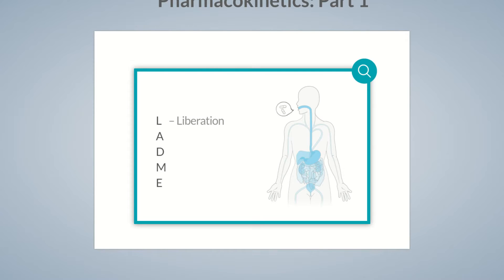L stands for liberation, the process by which a drug is released from its dosage form. A represents the absorption of a drug into the body. D indicates the distribution of a drug through the bloodstream or the lymph system in various tissues. M stands for metabolism or biotransformation of the drug. Finally, E represents excretion, the removal of the substance from the body.